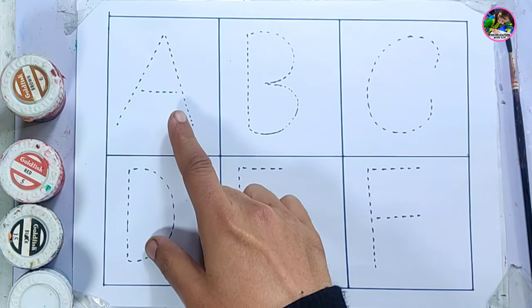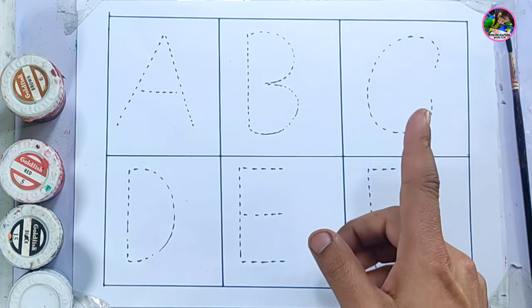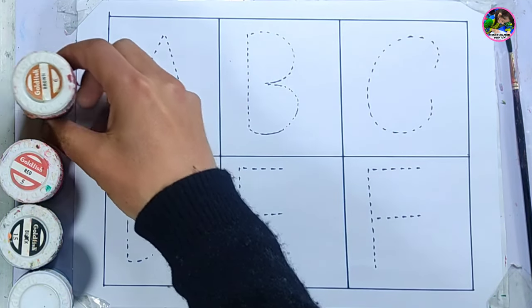Dear kids, we will draw A for apple, B for ball, and C for cat. Now we will know about some colors.